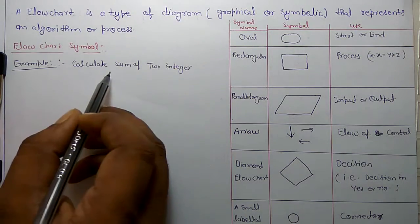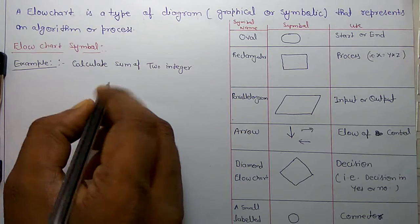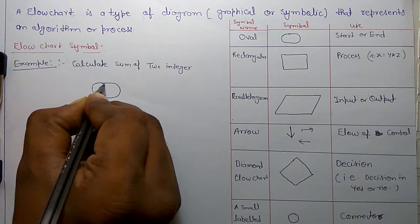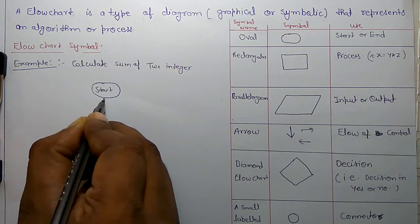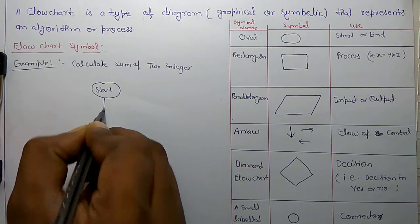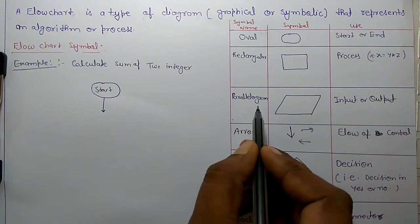Let's take one example, you have to calculate sum of two integers using flowchart. For that, first is start, and start symbol, that is oval. Now flow the control from start to input the two integers. For input there is a parallelogram.